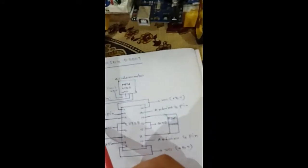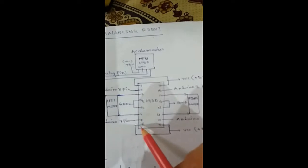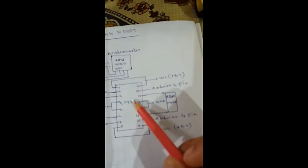And then we have to connect the left motor. We have connected this left motor to the 3rd pin and 6th pin of this motor controller, and the right motor to the 14th pin and 11th pin of the motor controller.